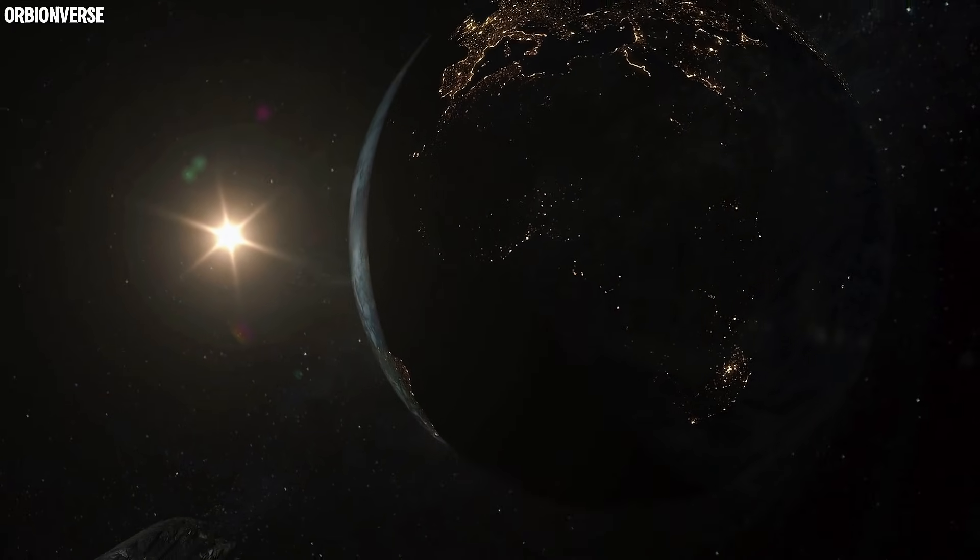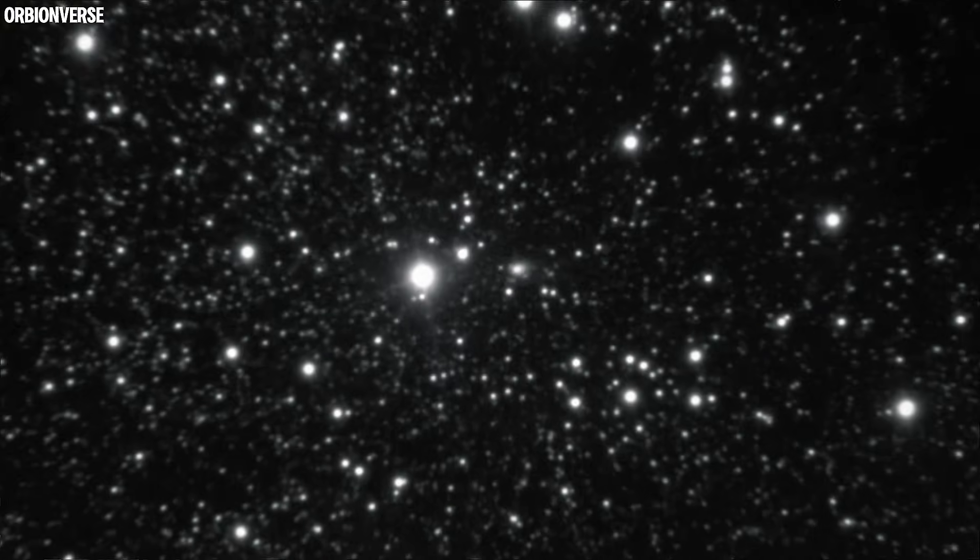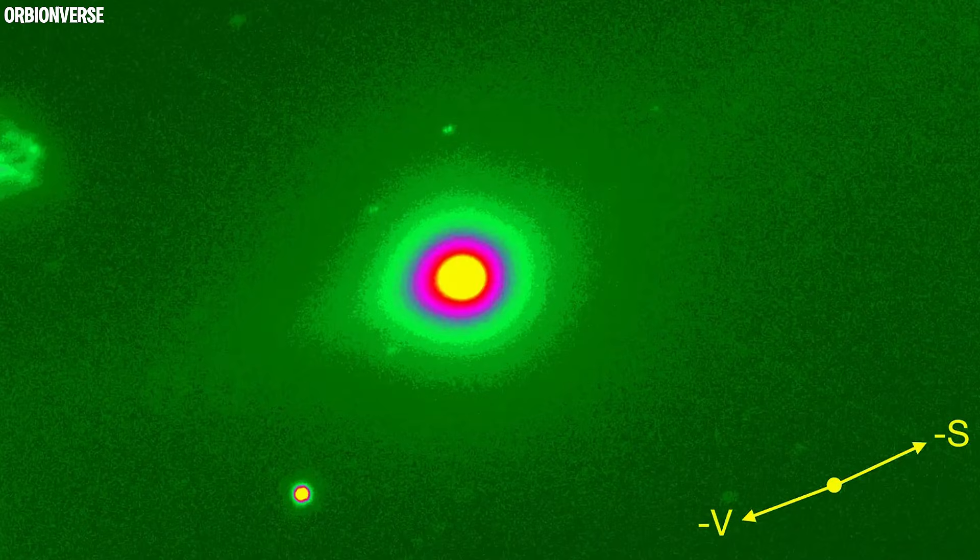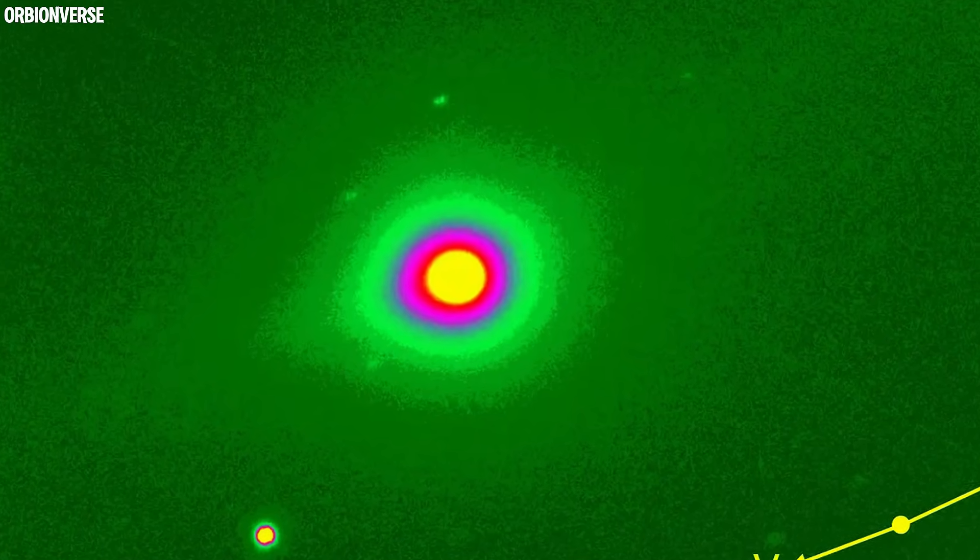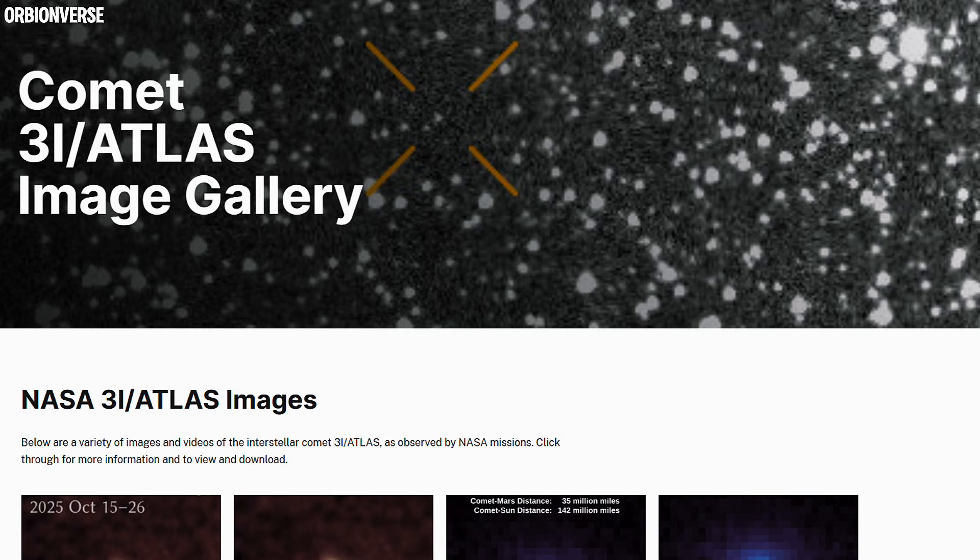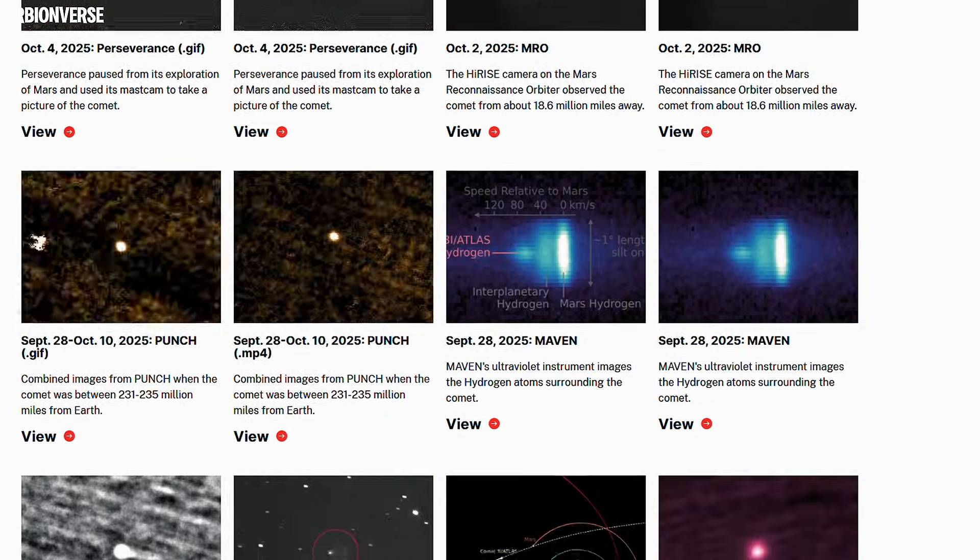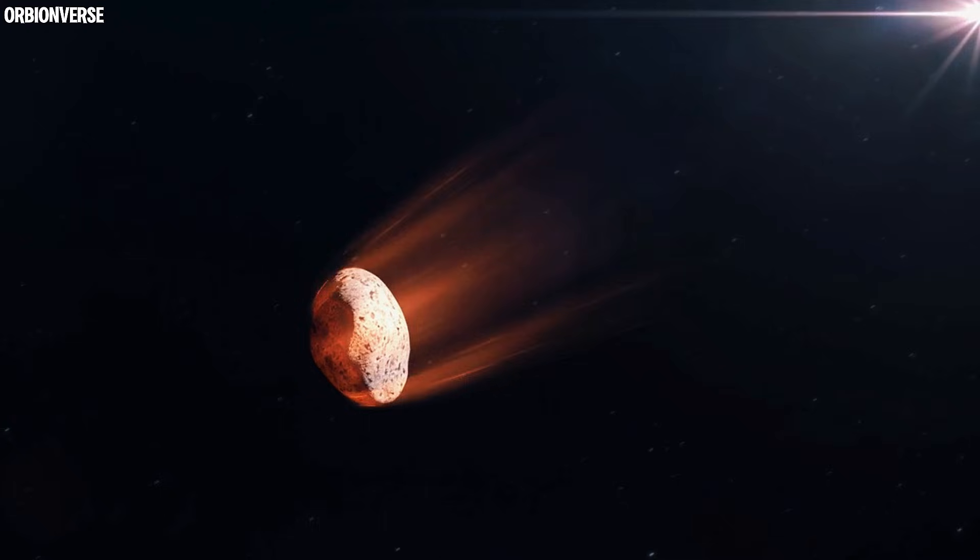Something strange has entered our sky, not quietly, not slowly, but with a brightness and intensity no one expected. Every night it grows, every hour it changes. And today, it looks nothing like the comet scientists thought it was. This is not a normal visitor from space.